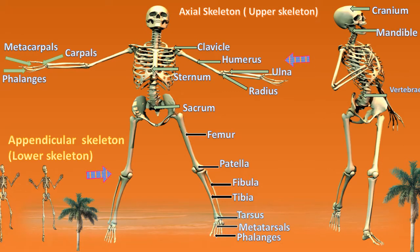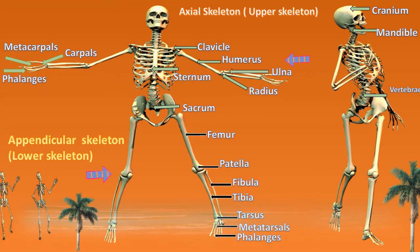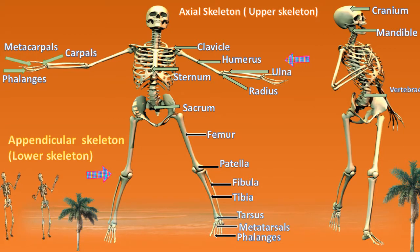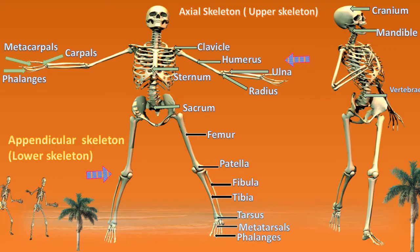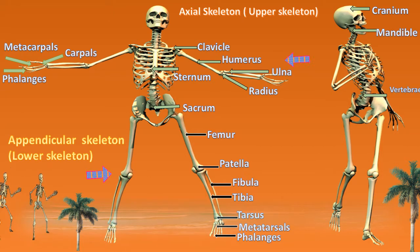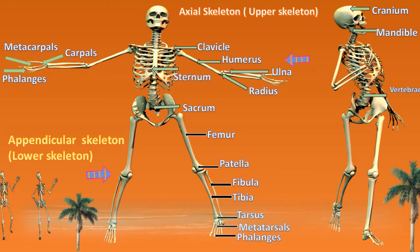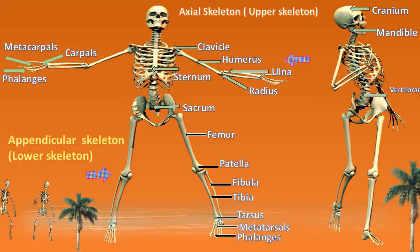Then we have the last one, which is the vertebrae. The vertebrae is otherwise known as your backbone or your spine. The vertebrae gives you shape — it holds your body in shape. The skeleton system is very important because it gives you shape. If we did not have any skeleton system, we would have no shape and we would just be slobby. So the bones of the skeleton system are all important to us as humans.